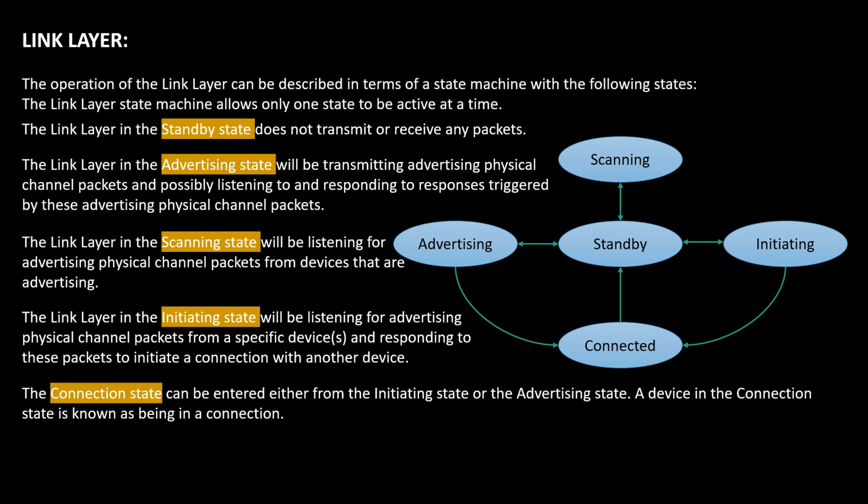The operation of the link layer can be described in terms of a state machine, which allows only one state to be active at a time. For example, an ESP32 Bluetooth device can be in any one of these states. In the standby state, there is no transmission or reception of packets and the device is idle. In the advertising state, the device transmits advertising physical channel packets and possibly listens and responds to triggered responses. In the scanning state, the device listens for advertising packets. In the initiating state, it listens for advertising packets from a specific device and responds to initiate a connection. The connection state can be entered from either the initiating or advertising state.